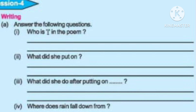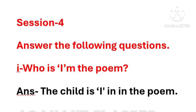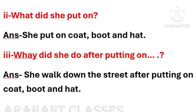Session 4 questions and answers. Question number 1: Who is 'I' in the poem? Answer: The child is 'I' in the poem. Question number 2: What did she put on? Answer: She put on coat, boot and hat. Question number 3: What did she do after putting on? Answer: She walked down the street after putting on coat, boot and hat.